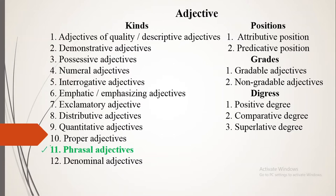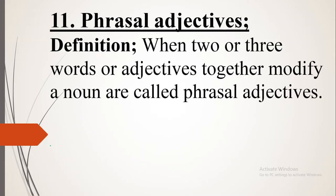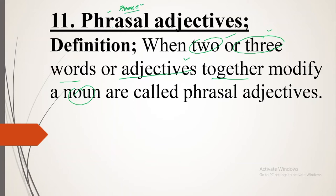Today we will be discussing the eleventh kind of adjective, known as phrasal adjectives. The definition: when two or three words or adjectives together modify a noun, they are called phrasal adjectives. The word 'phrasal' is taken from the word 'phrase,' and a phrase is a group of words which has no subject, no predicate, and does not give a clear and complete meaning.